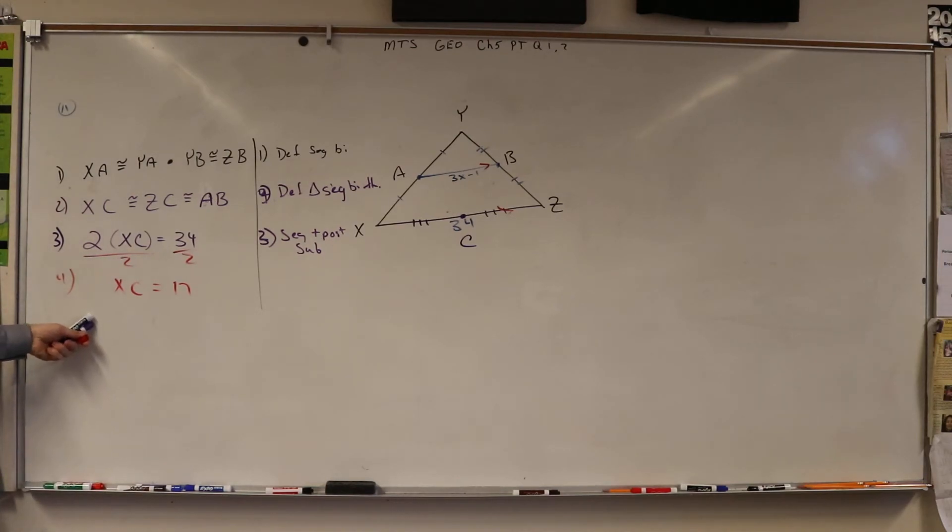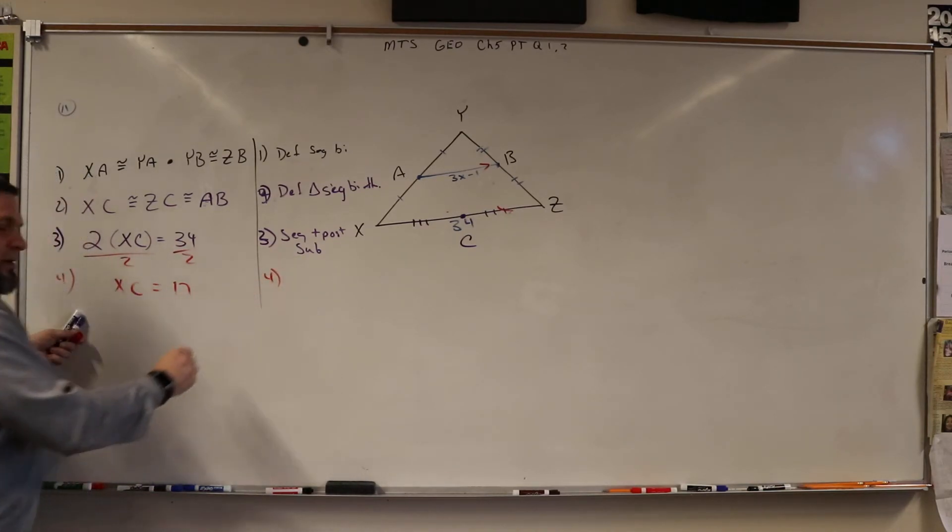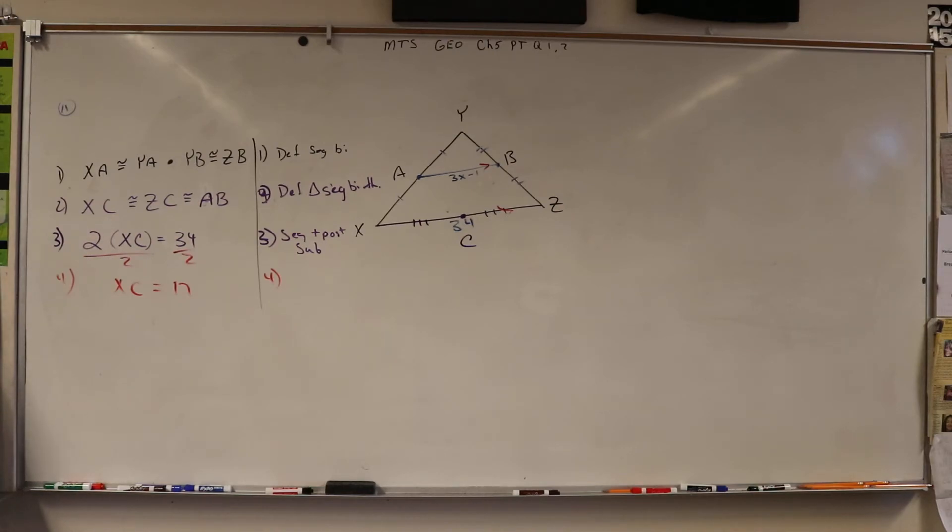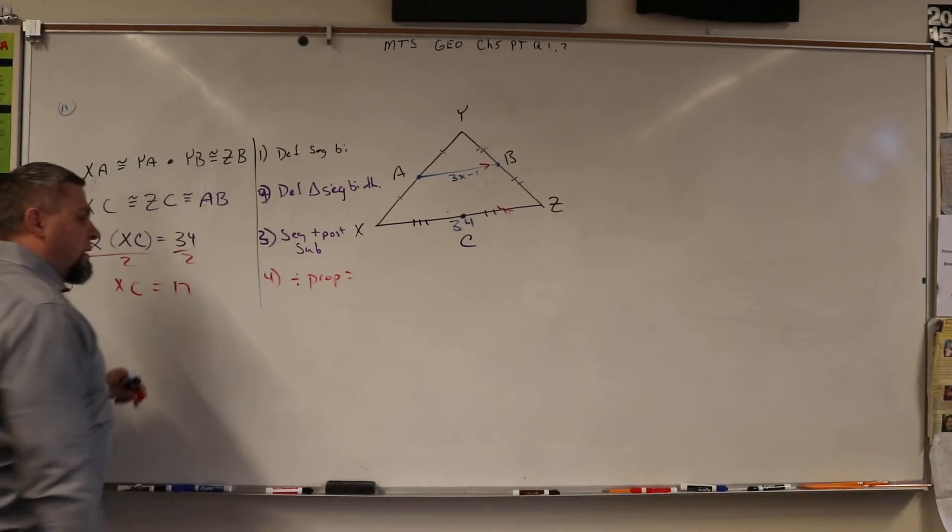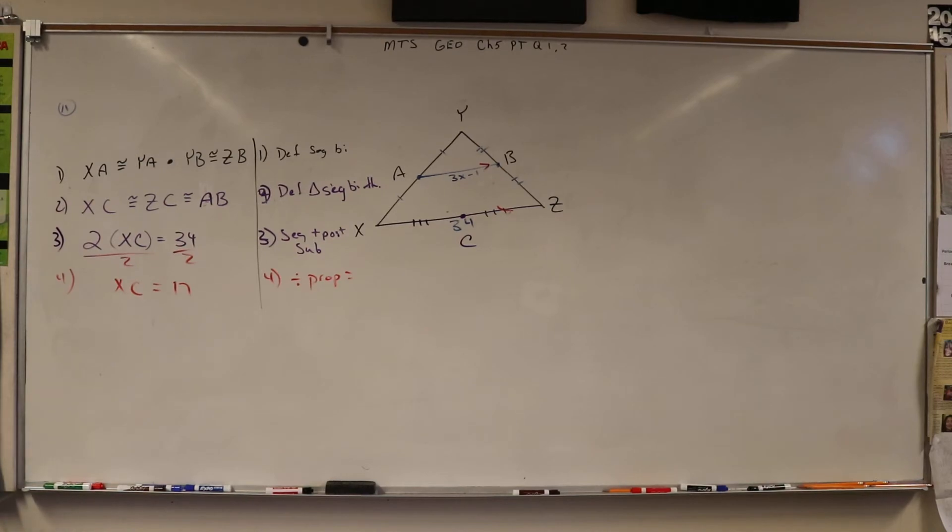And what did I do there? What's that called? We should know this part. Say it. No, no. Close, close. It is simplifying, but we call it something. It's not simplifying because we do it to both sides. If we just did it to one side, it'd be simplifying. Division what? Yes, there you go. Division property of equality. I knew you guys had it.